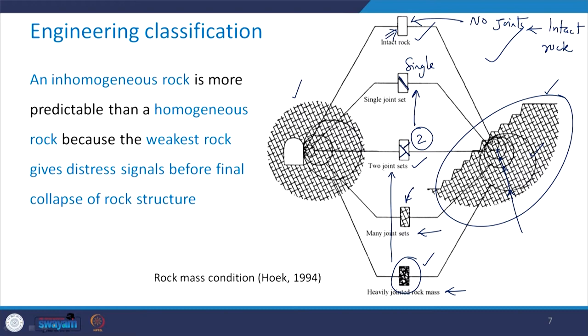Remember that an inhomogeneous rock is more predictable than a homogeneous rock, because more the discontinuity, more weak it is, and before the final failure, those discontinuities will give you enough distress signal before the final collapse of the rock structure. Two things to keep in mind: first, when we reduce the specimen size, the same heterogeneous rock can be taken as the intact rock — it depends upon the specimen size. Second, inhomogeneous rock behavior is more predictable than homogeneous rock because the weakest rock will give you enough distress signal before the final collapse, so you will have sufficient time to evacuate that place.